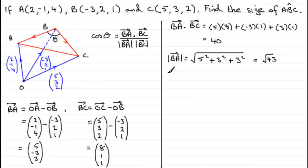Similarly, we can work out the magnitude of BC. That's going to be the square root of the sum of the squares of the components: 8 squared plus 1 squared plus 1 squared. If you work that one out, that is essentially the square root of 66.